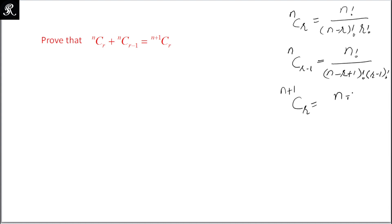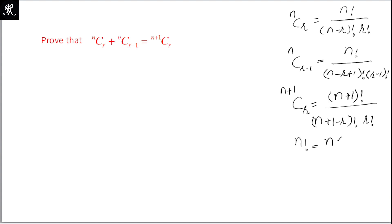Now here on the right side, (n+1)Cr is equal to (n+1) factorial upon (n+1 minus r) factorial into r factorial. Another thing we need to know is that n factorial is equal to n into (n minus 1) factorial, and we can expand it further until the term we need according to the question.